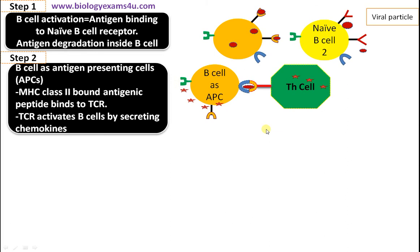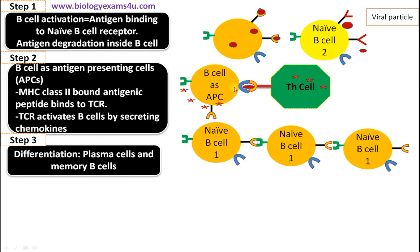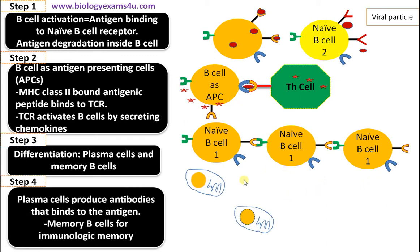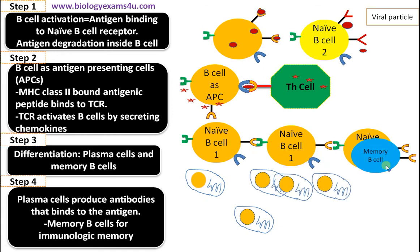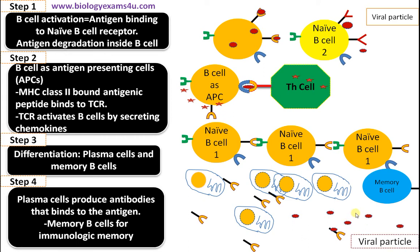This enhances B cell activation. The next step is differentiation of the B cell — this is called clonal selection. This particular B cell is selected to divide and later differentiate to form plasma cells and memory cells. Memory cells are responsible for immunologic memory; when the same pathogen comes a second time, the body triggers an enhanced immune response. Millions of antibodies are secreted into the bloodstream by plasma cells to neutralize the viral particles.